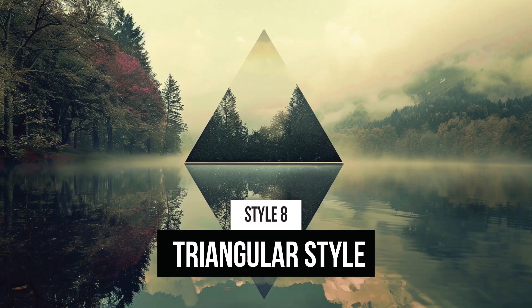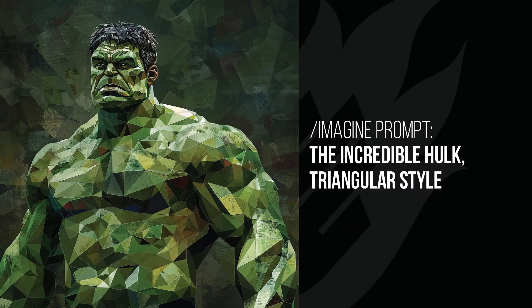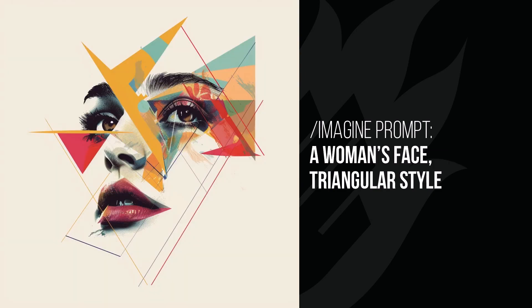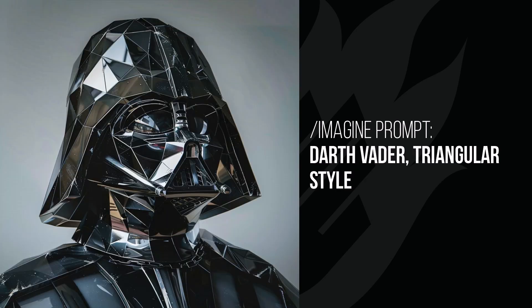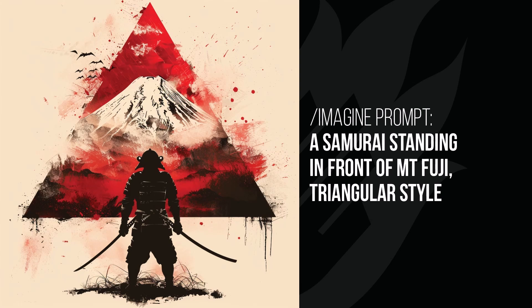'Triangular style' incorporates triangles into images in interesting ways. The Hulk goes for a low poly style look, which is the least exciting effect personally. The woman's face has triangles incorporated artistically into it. The Terminator has a triangle in the background with synthwave neon colors and a small triangle on the sunglasses. Darth Vader has a photographic low poly look, and the samurai in front of Mount Fuji has a large red triangle representing Mount Fuji — very artistic.